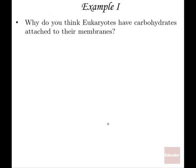Why do eukaryotes have carbohydrates attached to their membranes? Number one is identification — having that unique molecular pattern on the outside of the cell will facilitate the cell identifying other protein molecules and other molecules outside of the cell. For instance, if there's a particular molecule that signals the cell to do something, when that molecule lands on that receptor, the cell can actually engage in some kind of process.